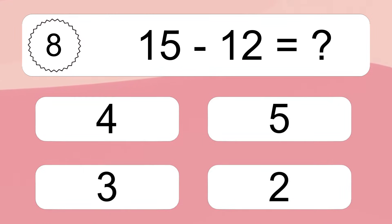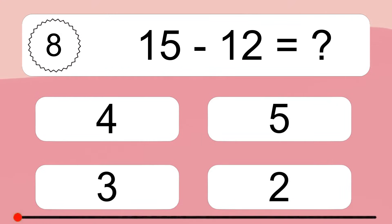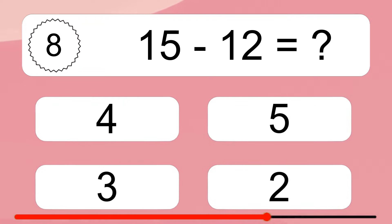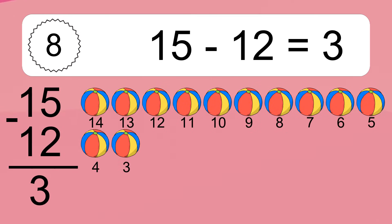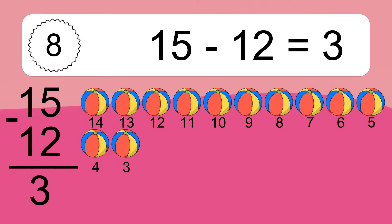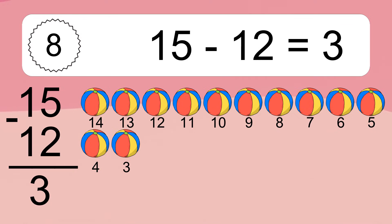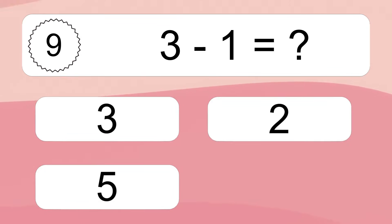15 minus 12 equals what? 15 minus 12 equals 3. Let's count it: 14, 13, 12, 11, 10, 9, 8, 7, 6, 5, 4, 3.